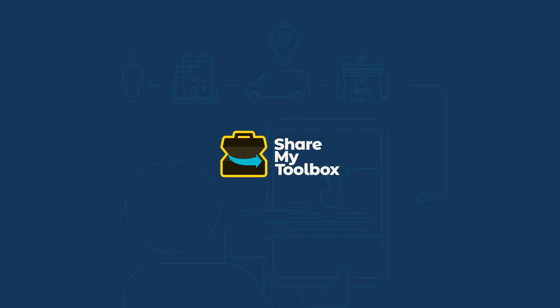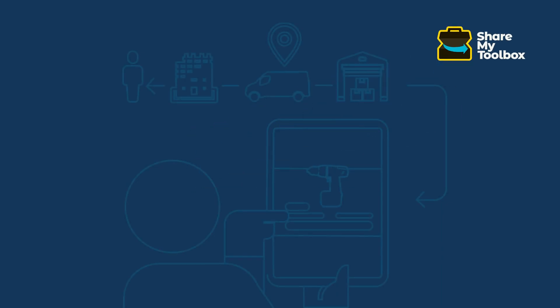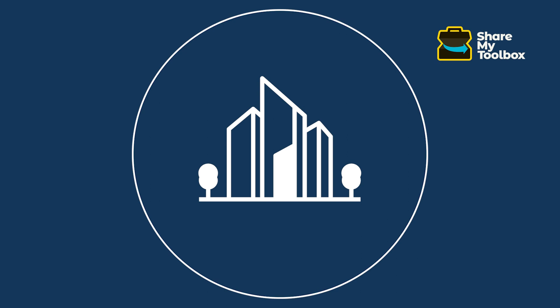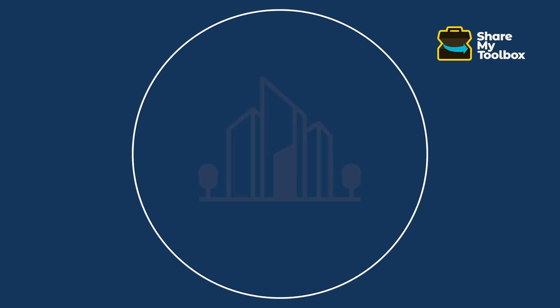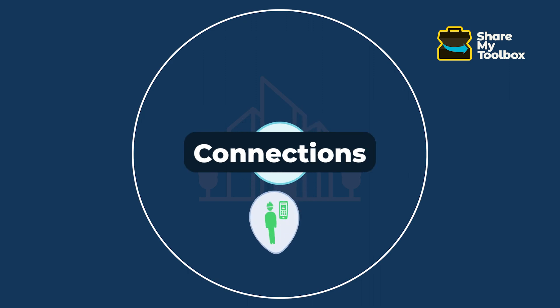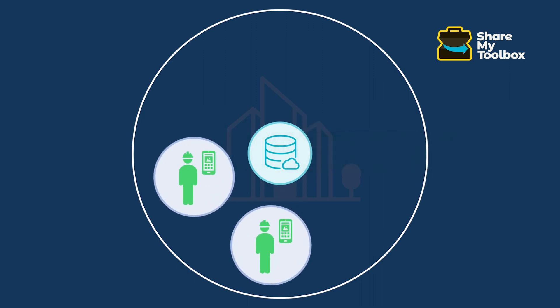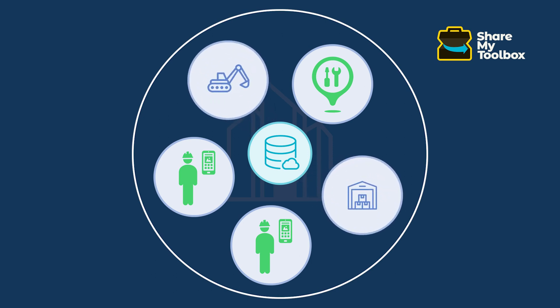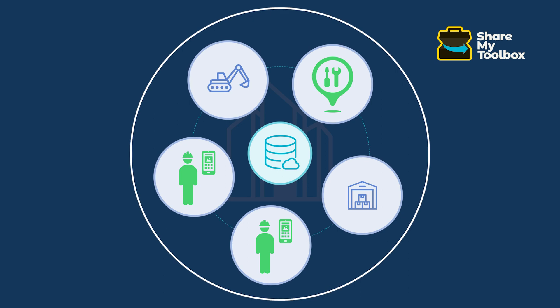Before we dive in, let's get familiar with some basics of Share My Toolbox. The main components are: the Company — this is the company you work for, where your user account resides and where items and tools belong; Items — the tools, consumables, or other materials the system can track; Connections — which define who has responsibility for items. For example, you are a connection as an employee. Connections can also be virtual assignments such as a repair shop. Locations such as job sites and warehouses can be added to tools when loaned out.